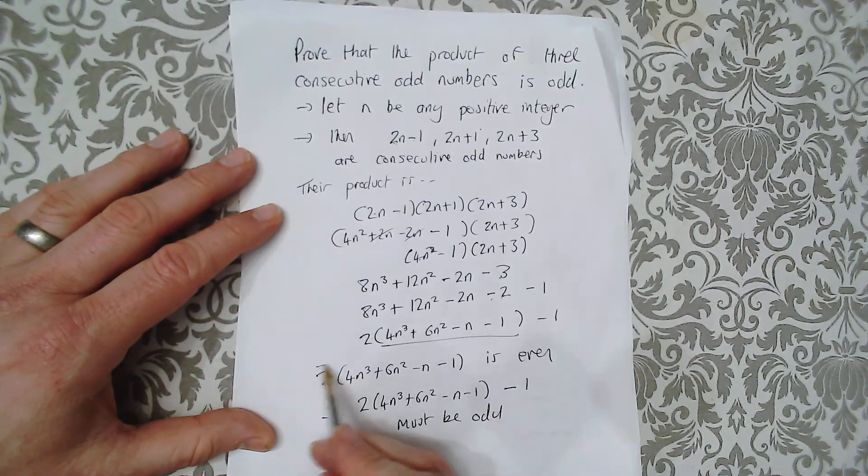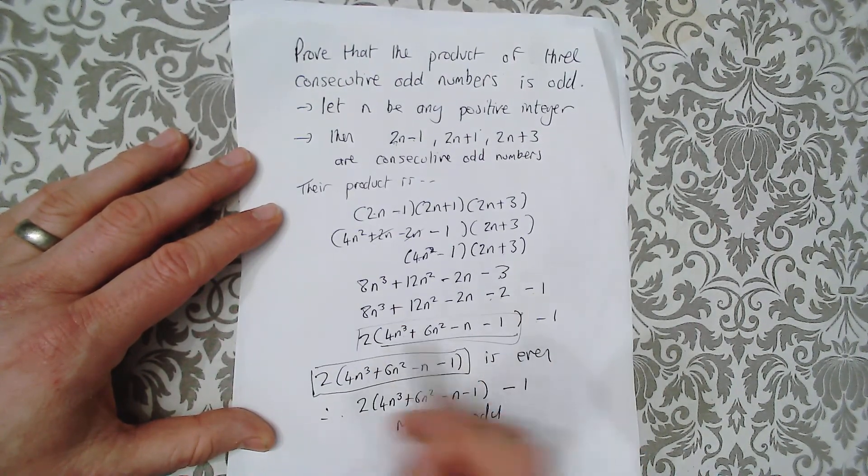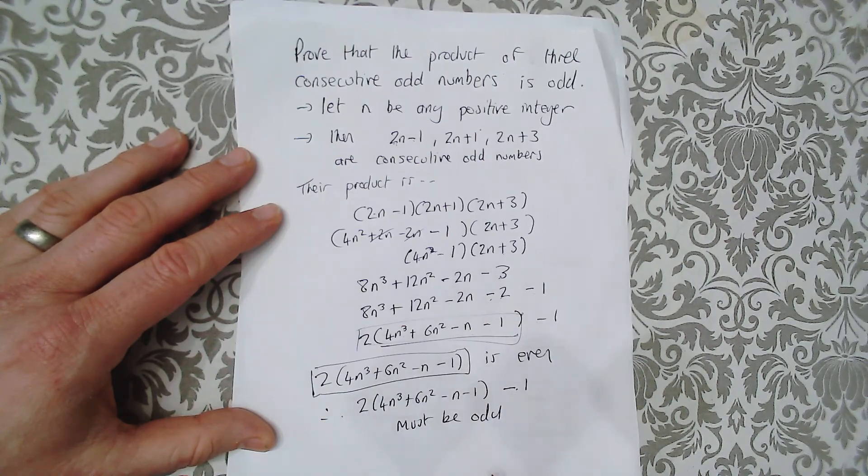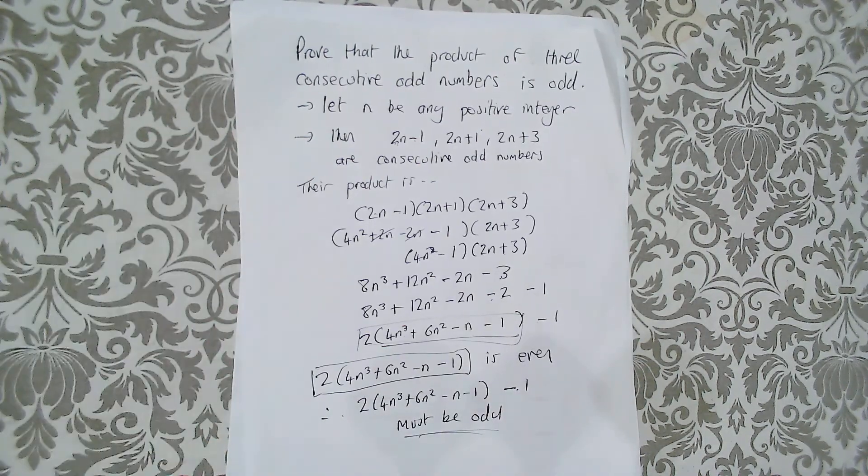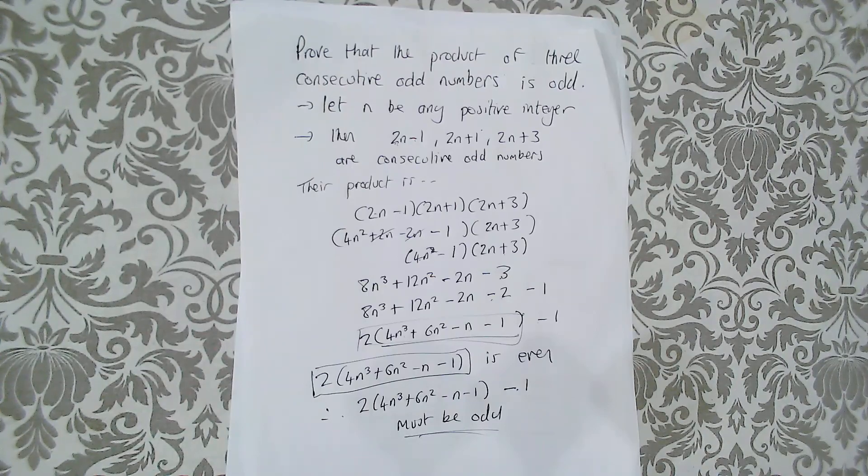So you can show, you can have an even number, which is there. Take away 1 from that even number, you must have an odd number. There you go. I hope that's clear. Thank you.